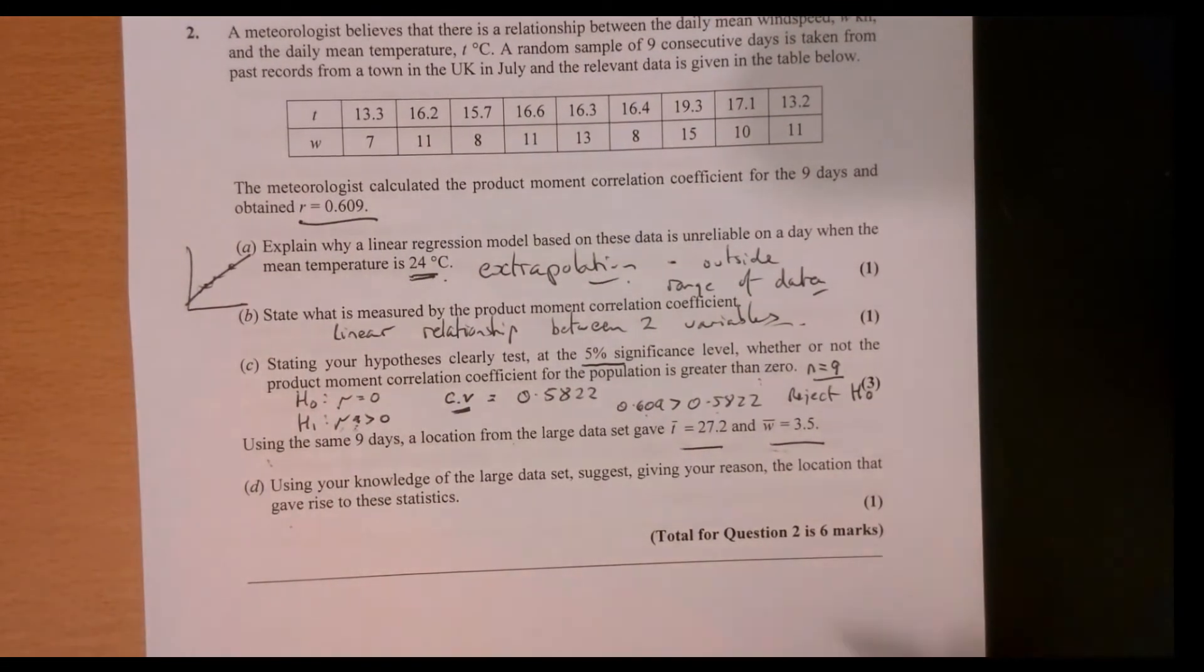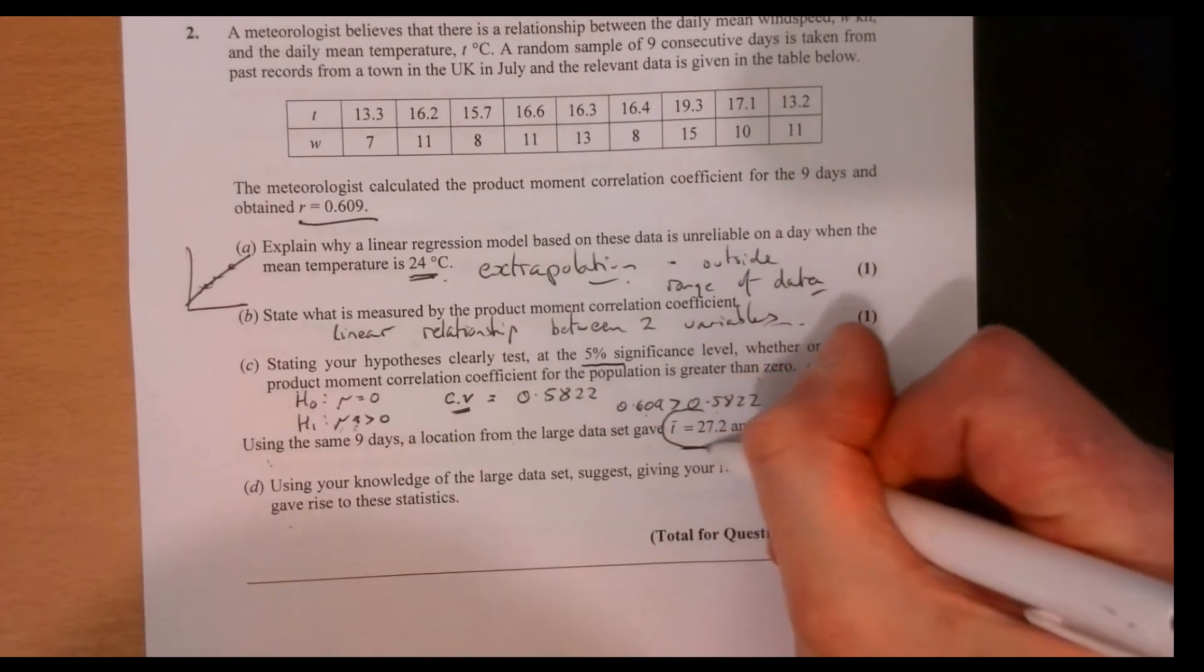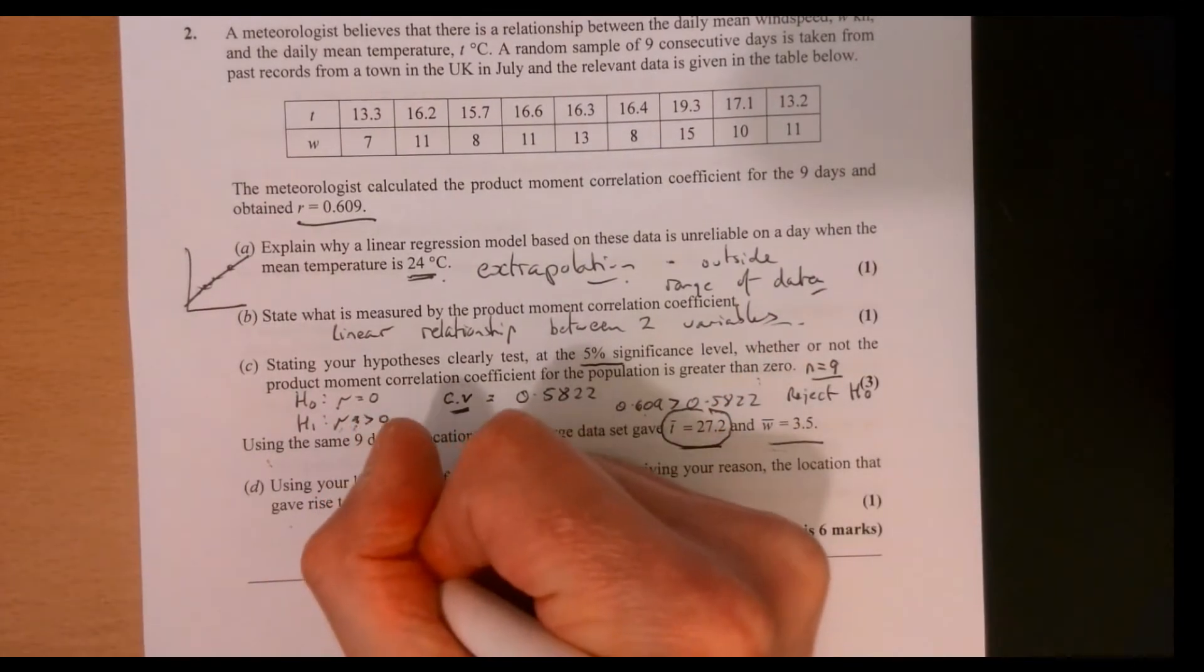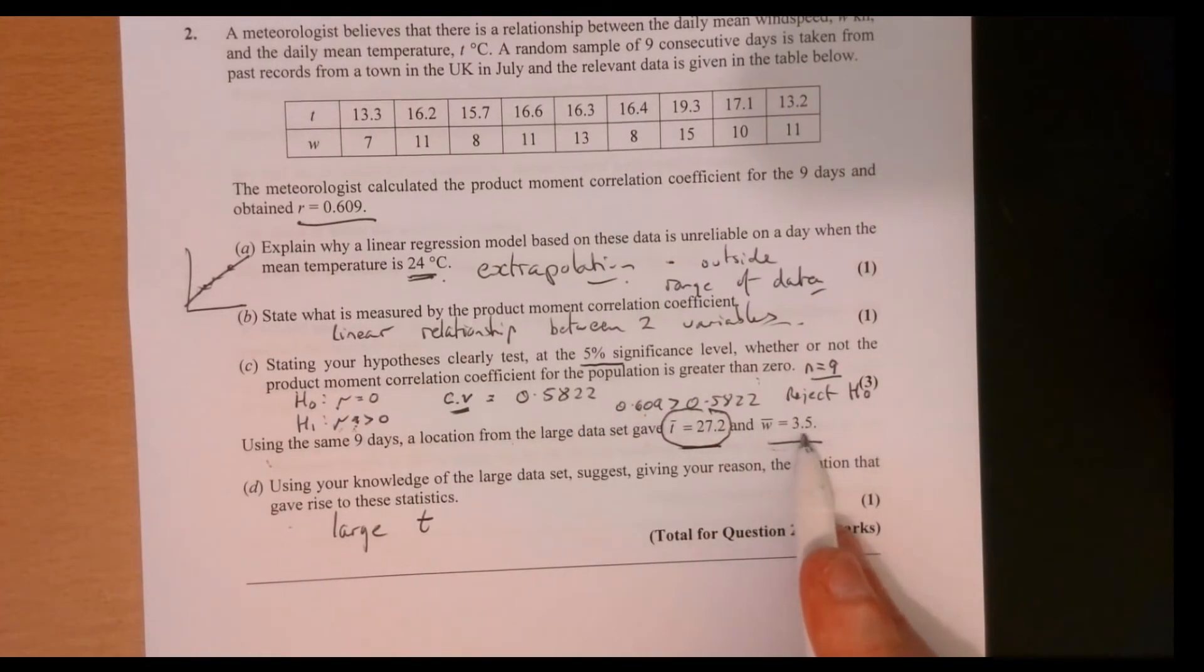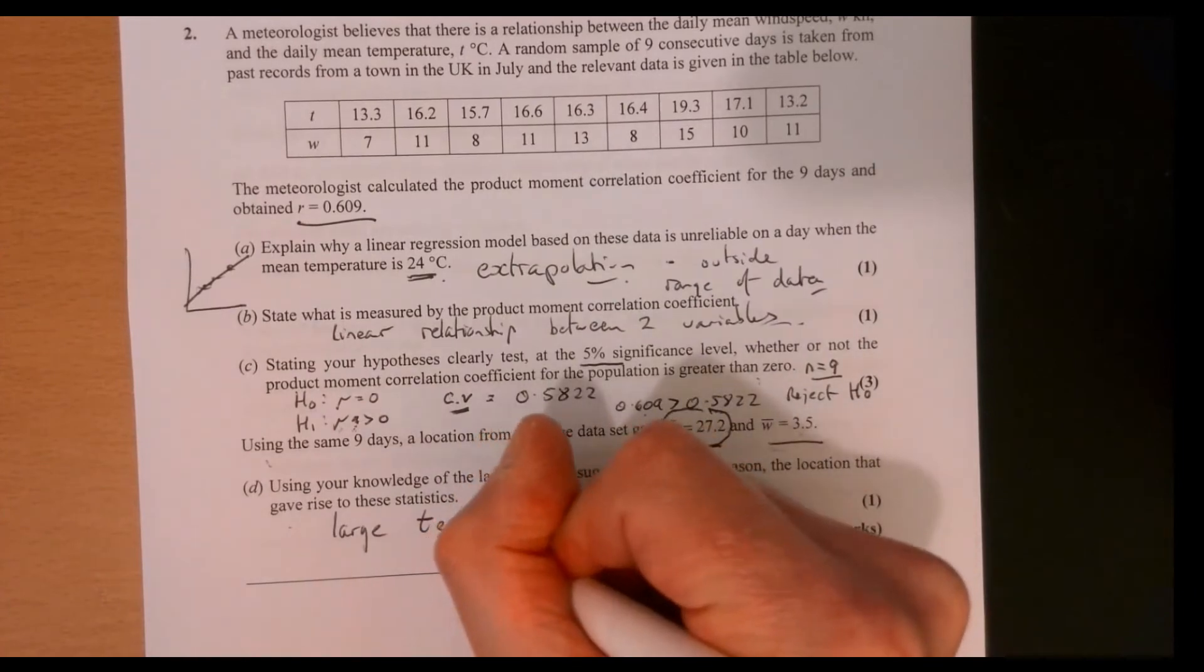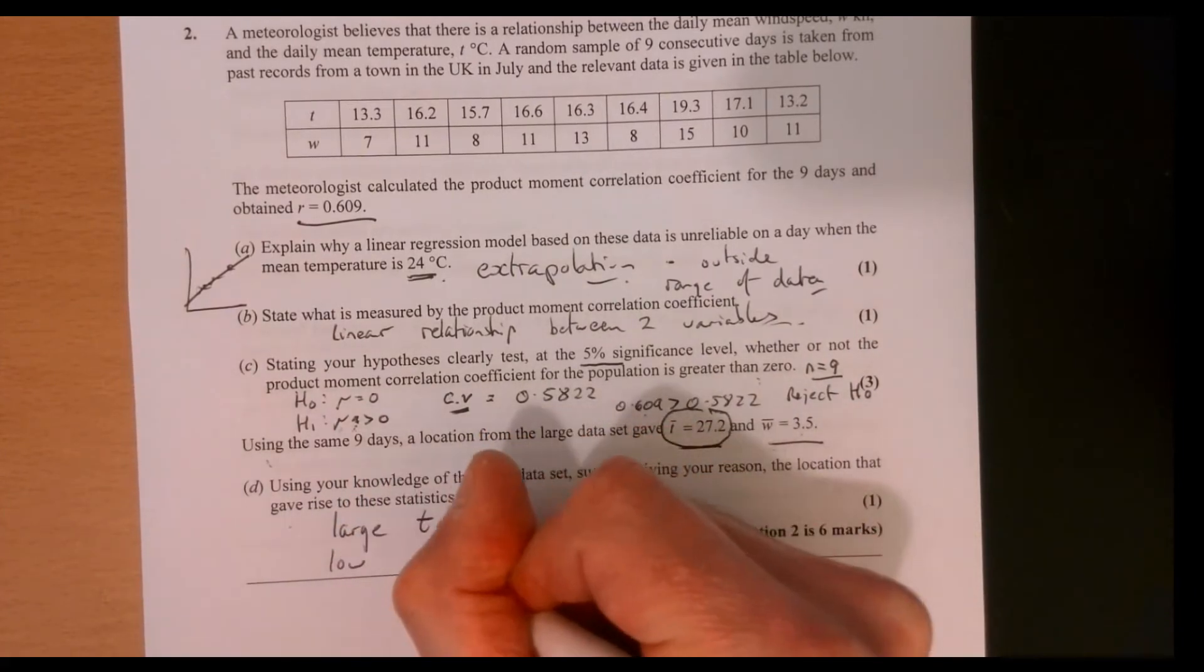So what have we got? We've got a much larger temperature. OK, so we've got large T and W, the wind speed, is small. So we've got large temp and low wind.